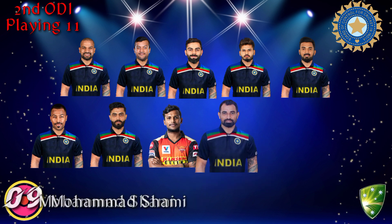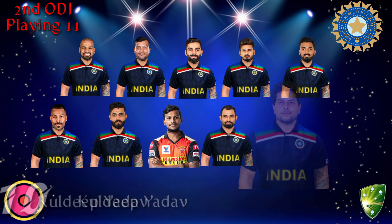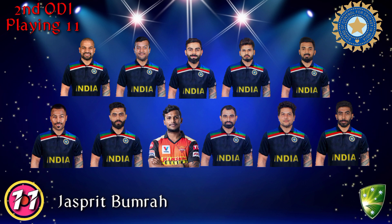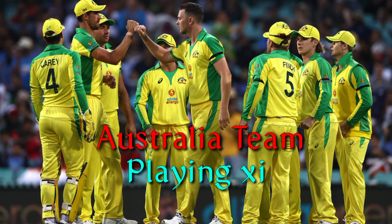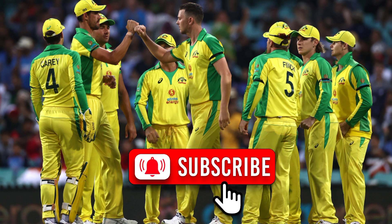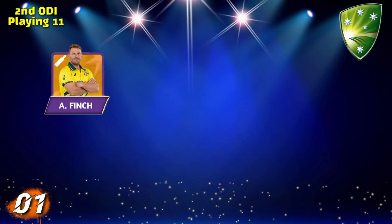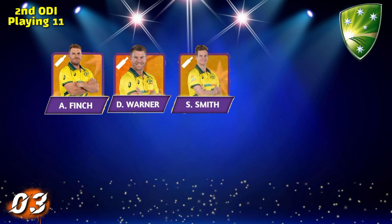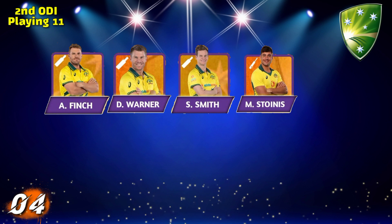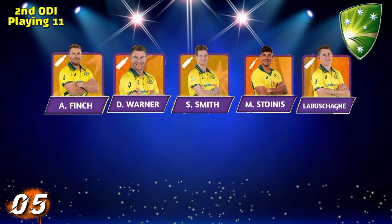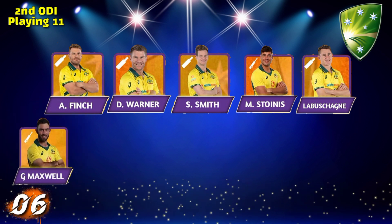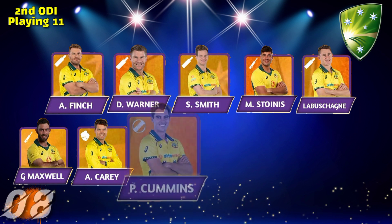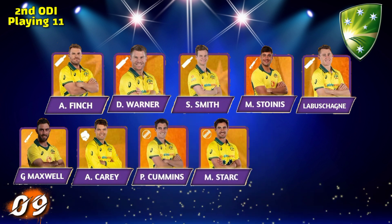Number nine Mohammed Shami, number ten Kuldeep Yadav, number eleven Jasprit Bumrah. Australia team playing 11: number one Aaron Finch, number two David Warner, number three Steve Smith, number four Marcus Stoinis, number five Marnus Labuschagne, number six Glenn Maxwell, number seven Alex Carey, number eight Pat Cummins, number nine Mitchell Starc.